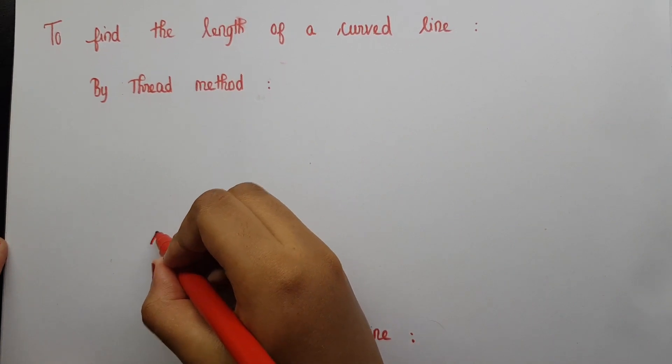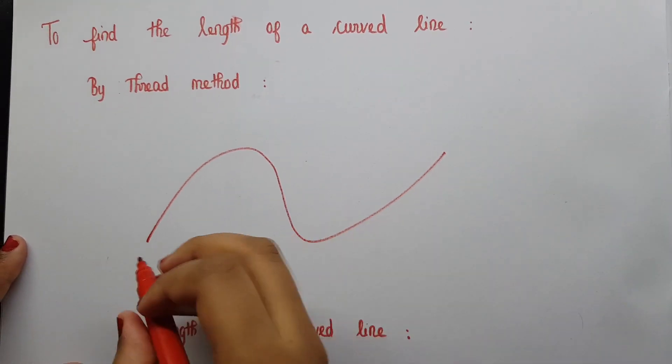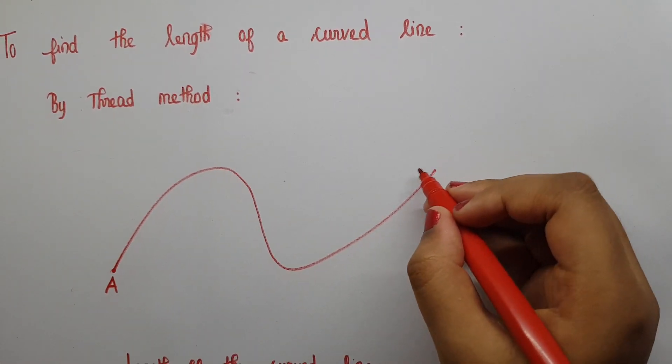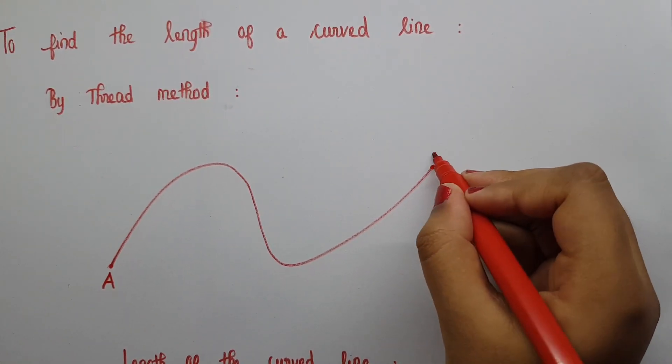Now we are going to measure the length of a curved line using thread method. The beginning of the curved line is marked as A and the end is marked as B.